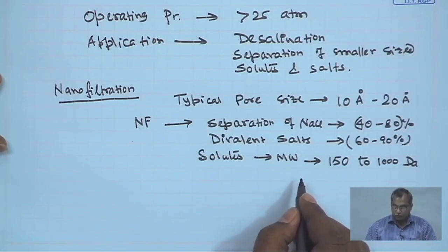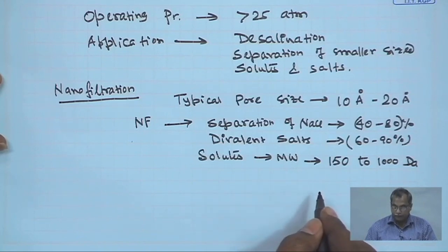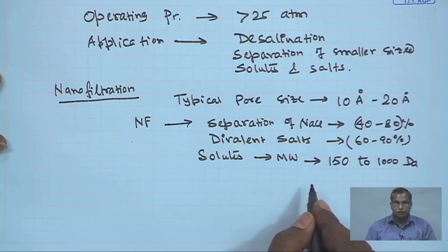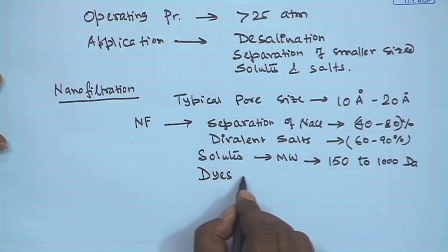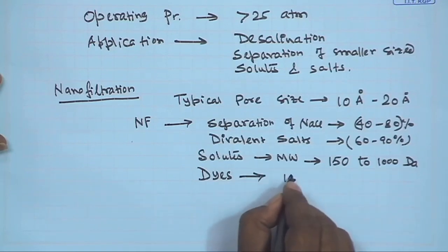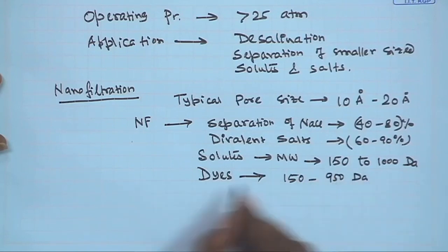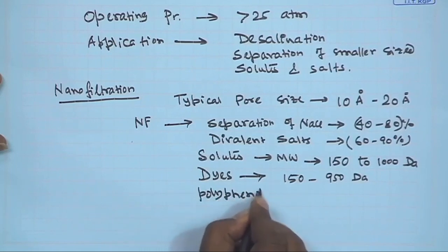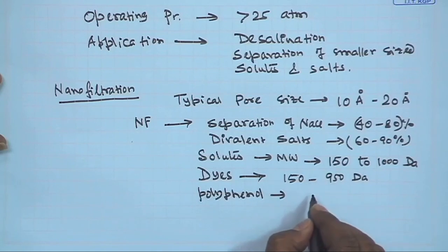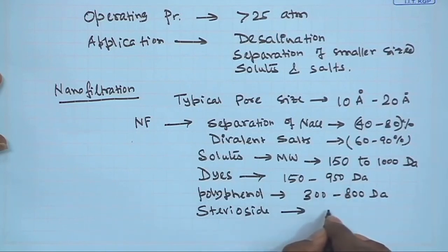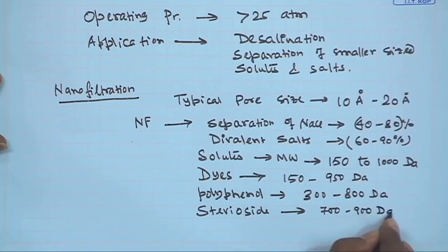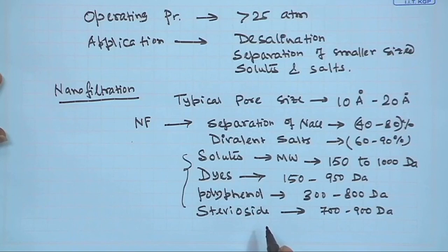There are various cutoffs of nanofiltration membranes available that can separate solutes of different molecular weights. All dyes encountered in the textile industry have molecular weights in the range of 150 to 950 daltons. Polyphenols from plant extracts have molecular weights between 300 to 800 daltons. Specialty phytochemicals such as steviosides and rubulosides have molecular weights in the range of 700 to 900 daltons. All these solutes can be separated or concentrated using nanofiltration.